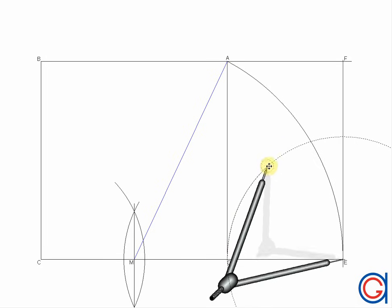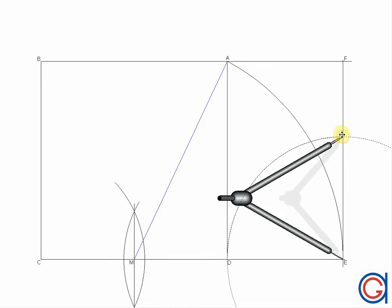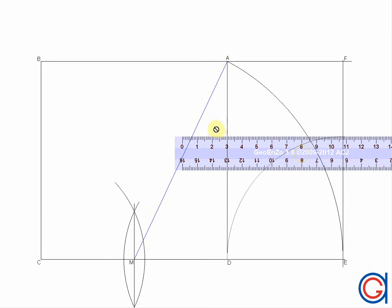So to continue drawing our golden spiral, we must continue drawing squares in our previously calculated golden triangle. To do this, set your compass on point E and radius ED. We will describe an arc to the right to intersect the line EF.